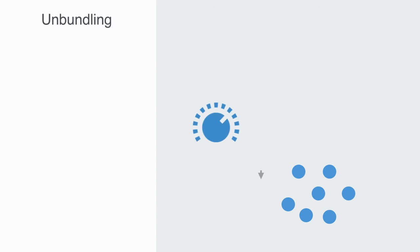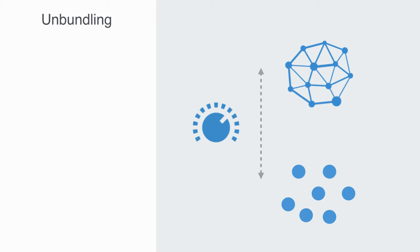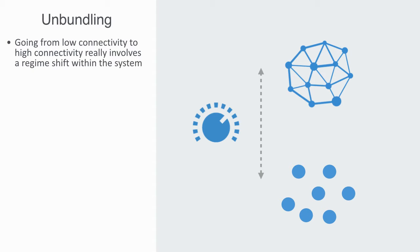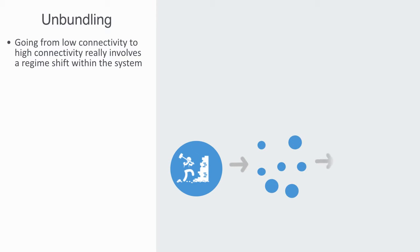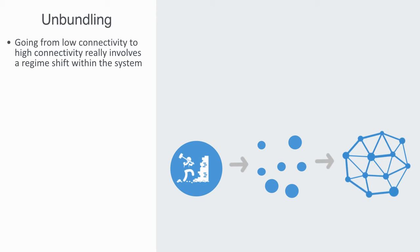In the previous module we talked about how the density of connections within a system is a key metric to understanding its behavior and overall makeup. Going from low connectivity to high connectivity really involves a regime shift within the system. One way of understanding this process of change is through what is called unbundling. When we get a reduction in transaction costs, a homogeneous monolithic system can be broken up into small parts that are distributed out and then re-coordinated through this network of connections.